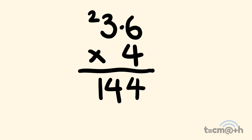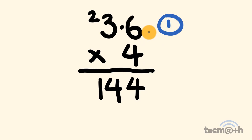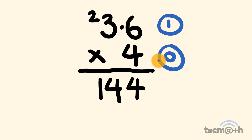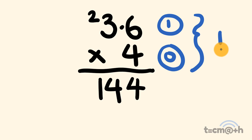Now we're going to put the decimal in. We look at the numbers we started with — we have 3.6, which has one number to the right of the decimal place, the 0.6 part. For 4, we have 0 numbers to the right of the decimal place. We add these together: 1 plus 0 is equal to 1, and that means in our answer we're going to have one number to the right of the decimal place. So starting from the right we count in 1 and put our decimal place right there. Our answer is 14.4.